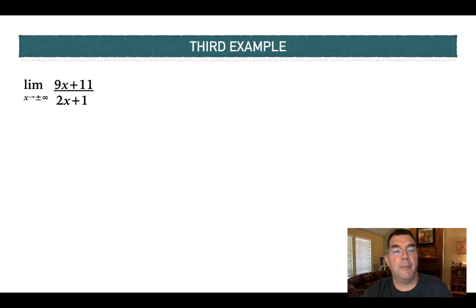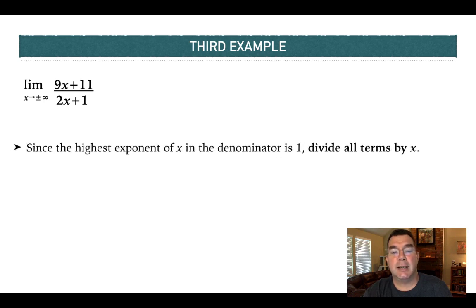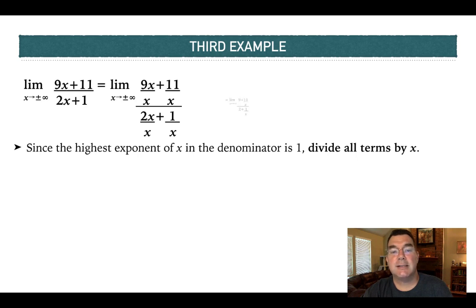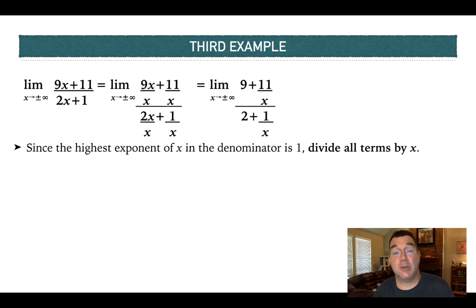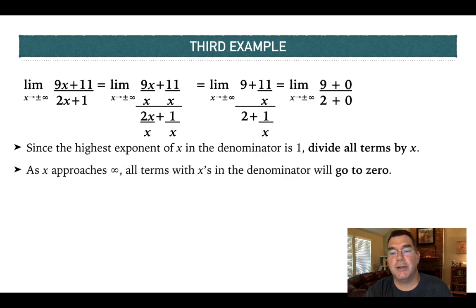In the third example, I have 9x plus 11 over 2x plus 1. The highest exponent in the denominator is x to the 1, so I divide everything by x: I get 9x over x plus 11 over x, all over 2x over x plus 1 over x, giving me 9 plus 11 over x, all over 2 plus 1 over x. Anything over x approaches 0 as x approaches infinity, so 11 over x is 0 and 1 over x is 0, leaving 9 plus 0 over 2 plus 0, which equals 4.5. That's why the third graph approached 4.5 at the far left and far right.